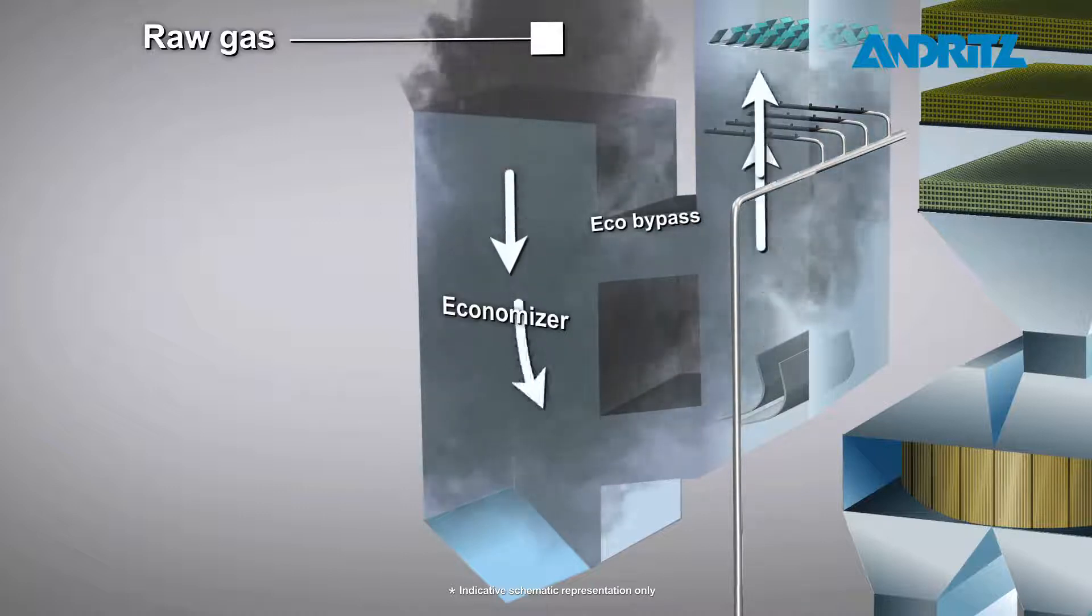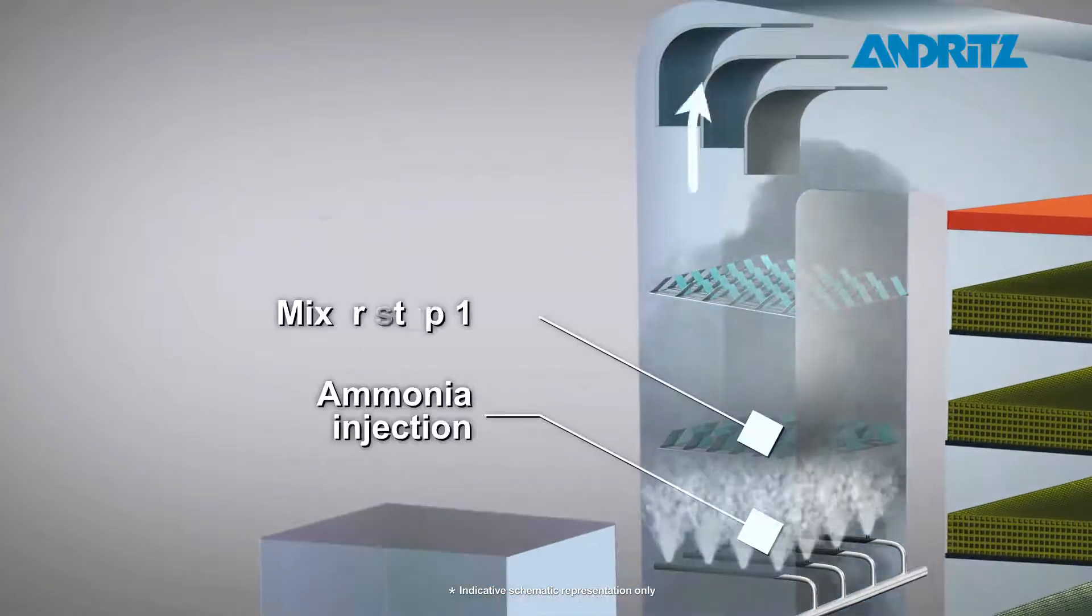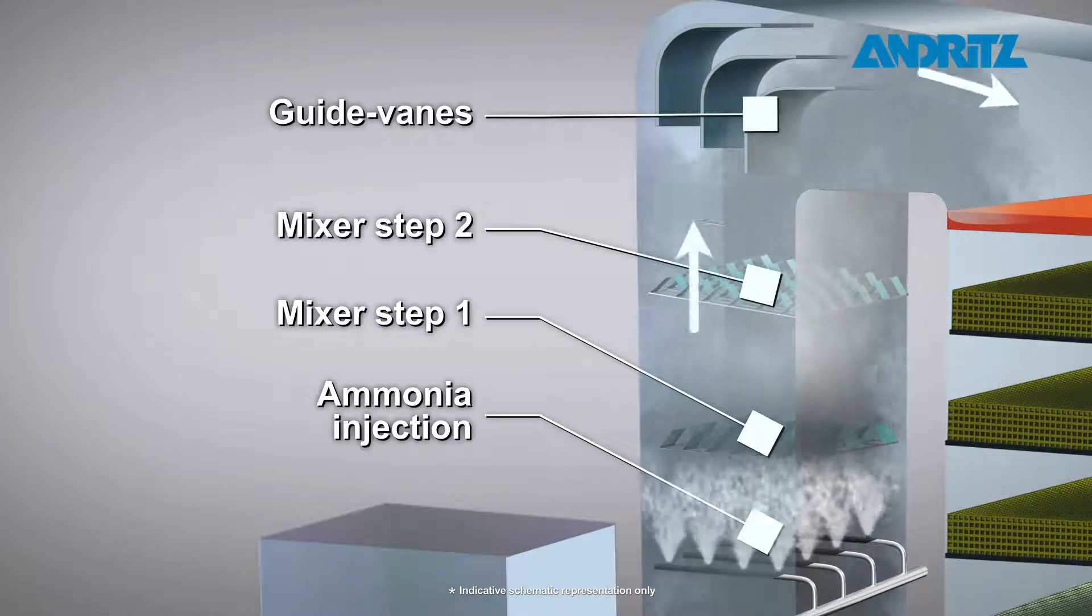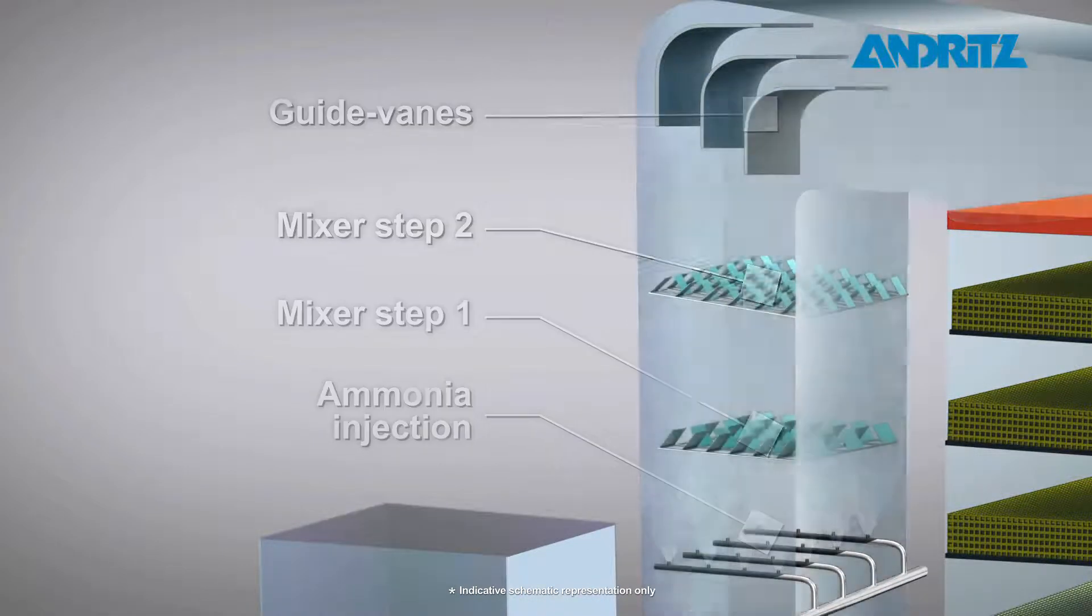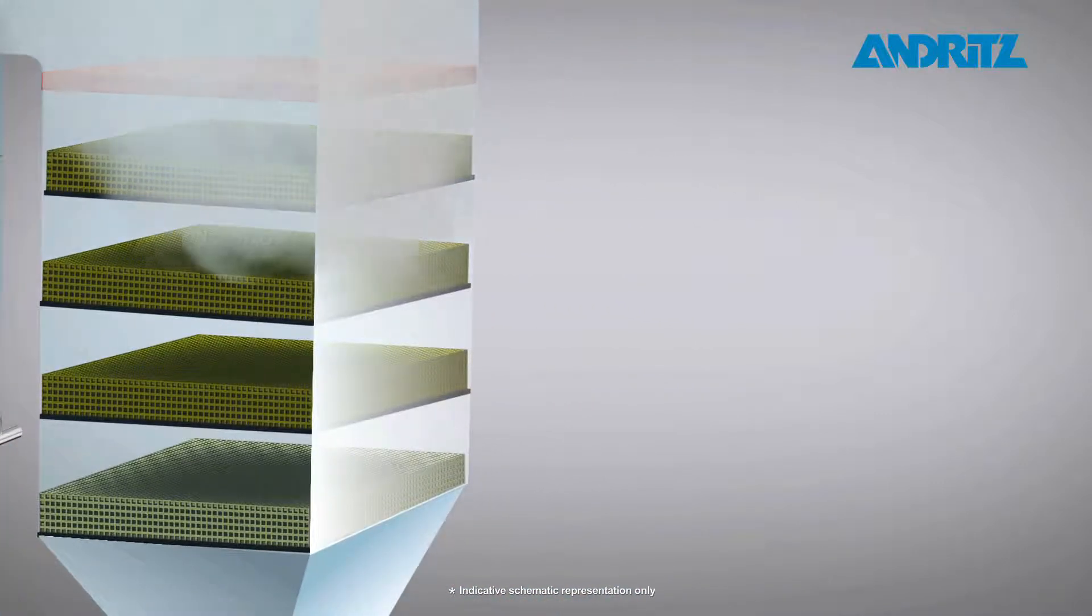The flue gas entering the reactor passes through the ammonia injection grid where ammonia is injected into the flue gas. The gaseous mixture passes through the catalyst where reduction of the oxides of nitrogen takes place.